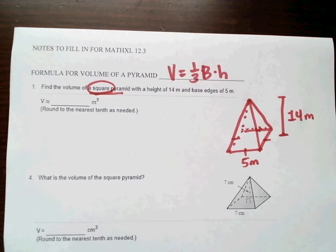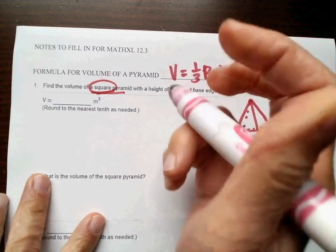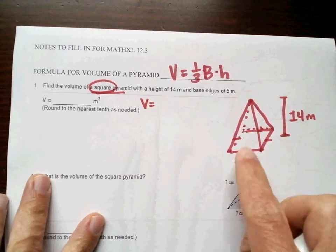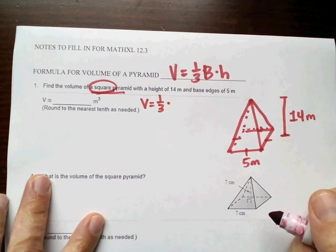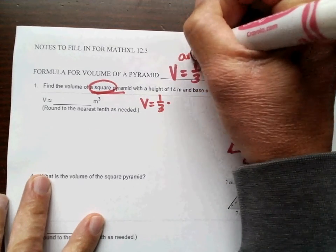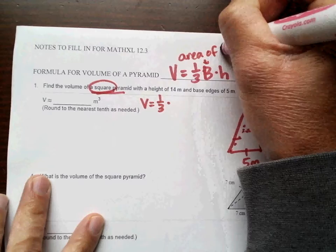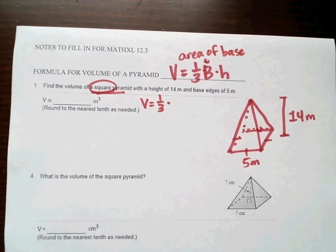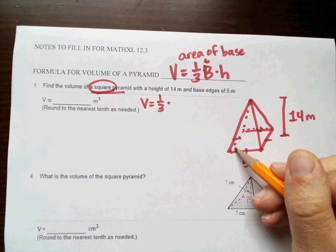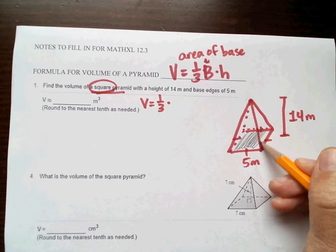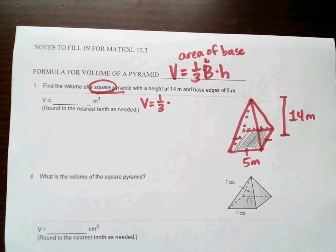To follow our formula, the volume of this pyramid is one-third times big B, which remember is the area of the base. Now, the base in this one that we have here is a square, so I need the area of that shape right there.